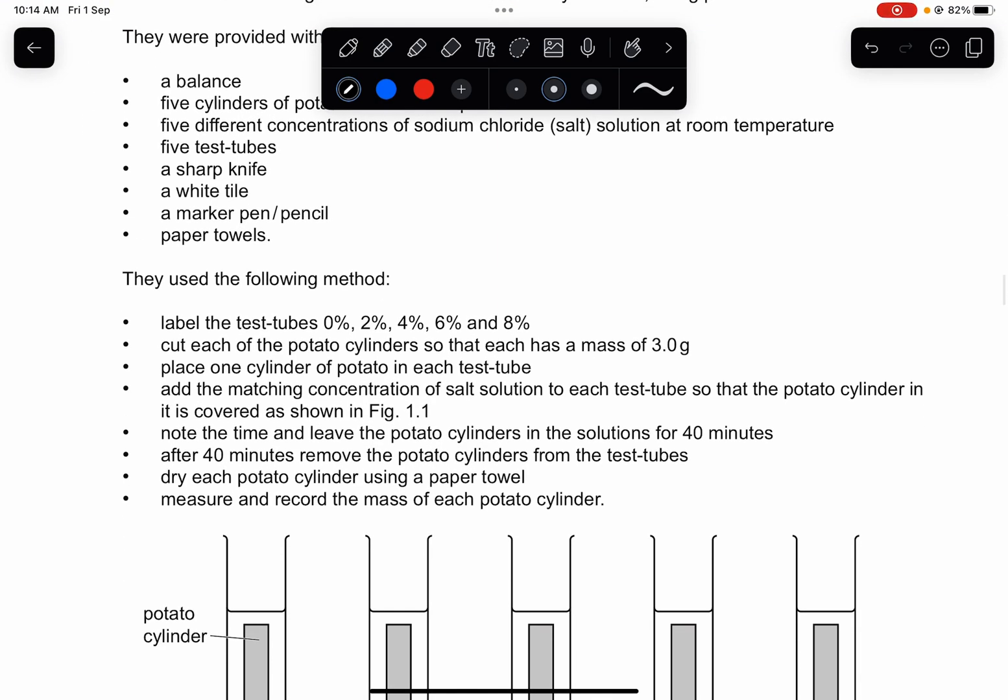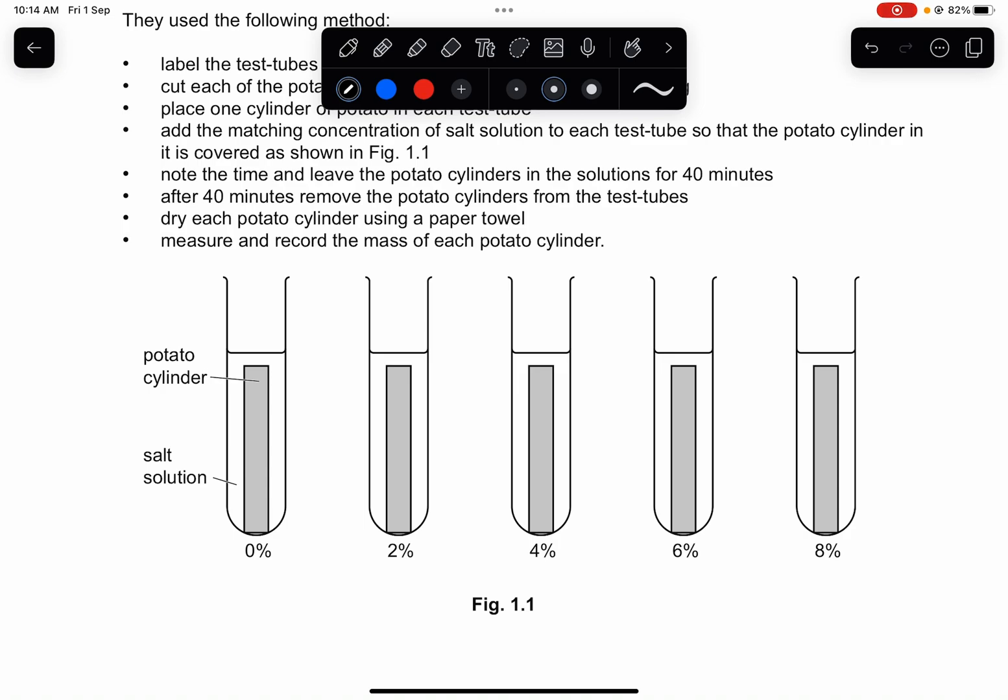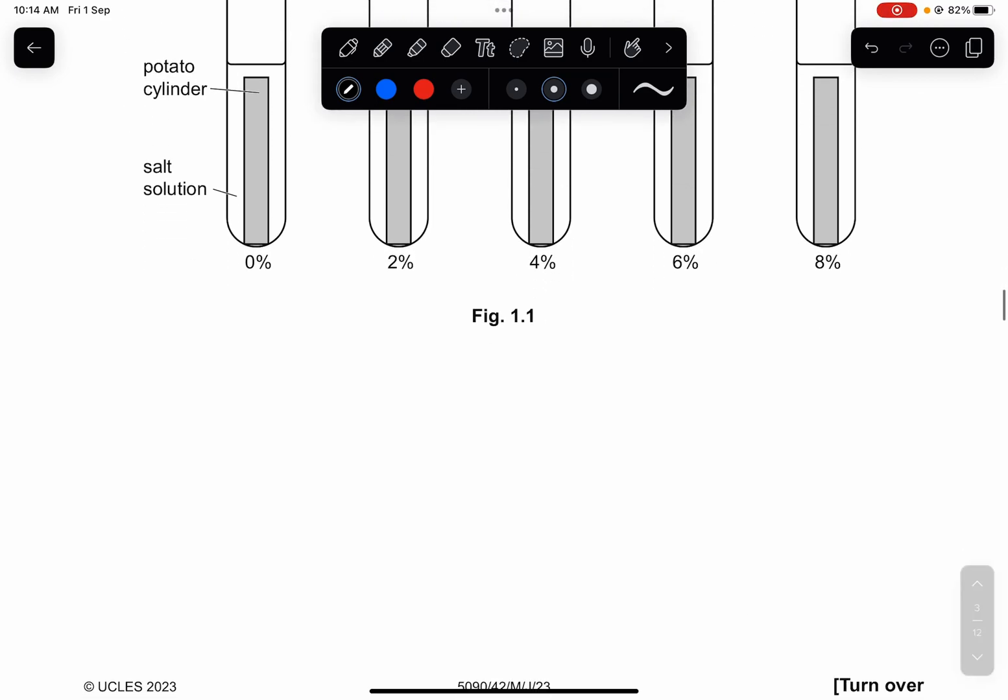And they use the following method: label the test tubes 0, 2, 4, 6, and 8 percent, and cut each of the potato cylinders, each with a mass of 3 grams. Place one cylinder into each of the test tubes, add the matching concentration of salt solution, and make sure it's covered, shown in figure 1.1. Note the time and leave the potato cylinders in the solution for 40 minutes. After 40 minutes, remove the potato from the test tubes, dry each with the paper towel, and measure and record the mass of each potato cylinder.